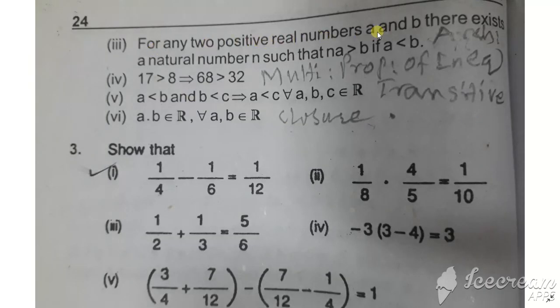Part iii: For any two positive real numbers A and B, there exists a natural number n such that n times A is greater than B. If A is less than B and we multiply A by a sufficiently large natural number, the result will be greater than B. This is the Archimedean property.